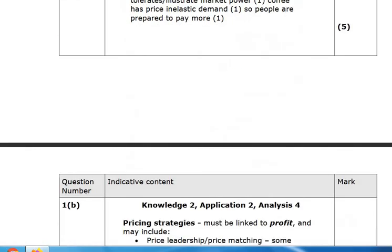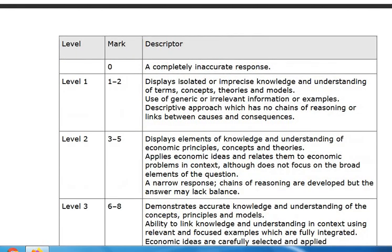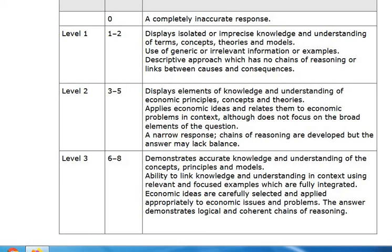Looking at the levels of response mark scheme: if you just write isolated or imprecise knowledge of terms, concepts, theories and models — or if your answer is unapplied and generic, or you're making unsubstantiated assertions with no chains of reasoning — you're in level one, capped at two out of eight, which is a disaster. If you're the type of student who turns up but never consolidates and goes into the exam writing answers that are vague and imprecise general knowledge with no economics shown, you're in level one.